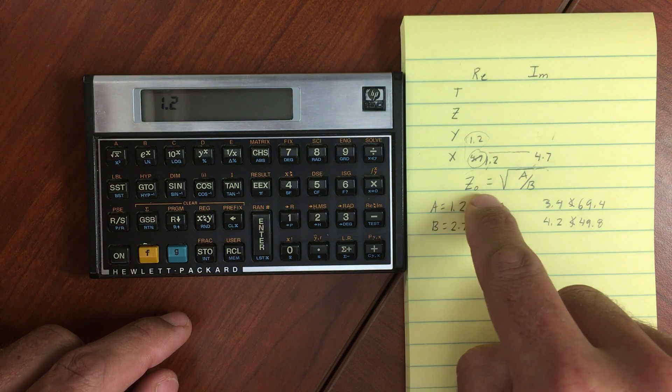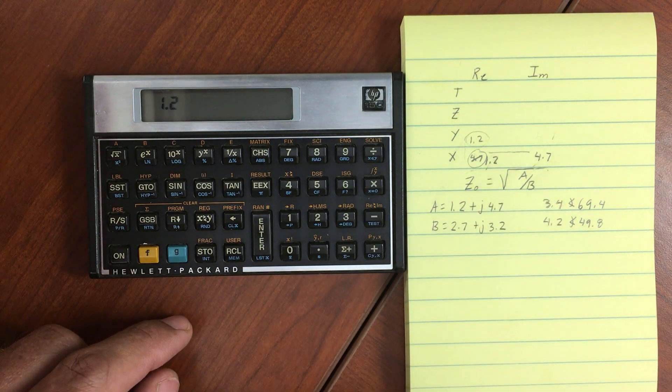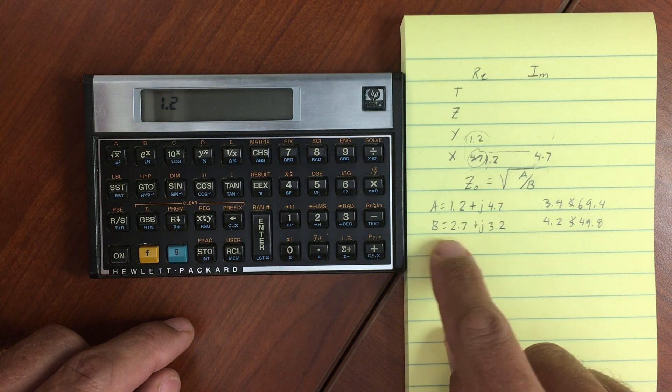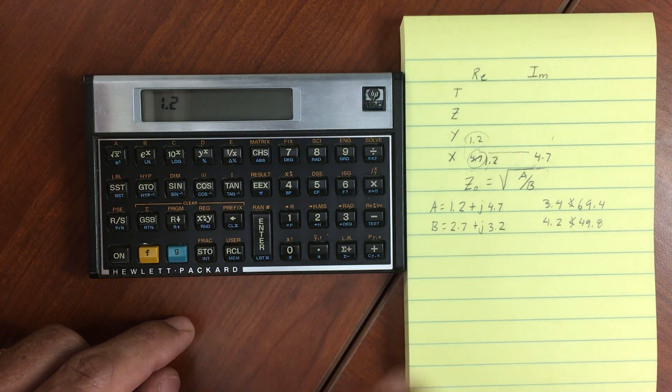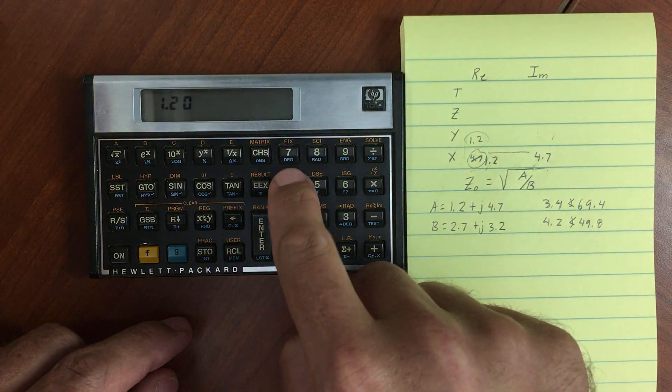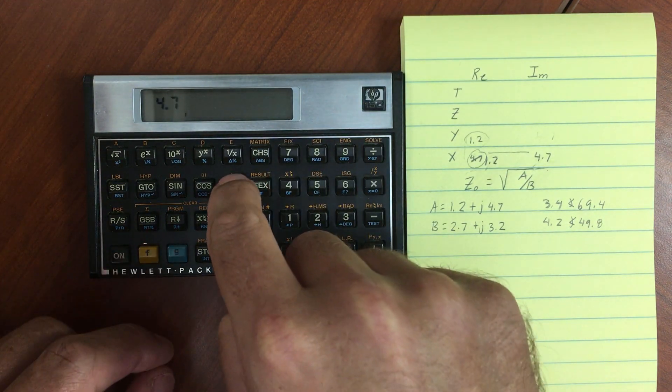We're going to do z-naught is the square root of a divided by b, where a is 1.2 plus j 4.7, and b is 2.7 plus j 3.2. So I've got 1.2. Let's do 4.7. Change that to a complex number.